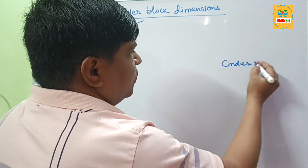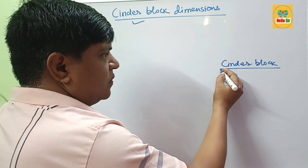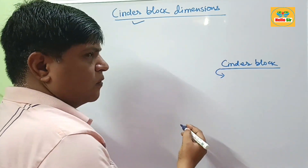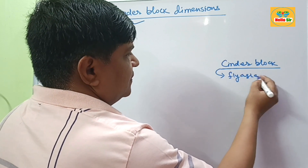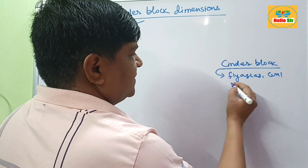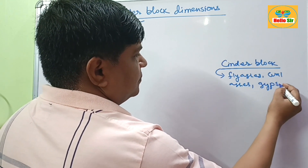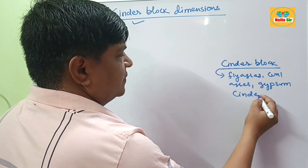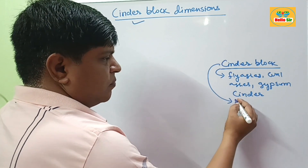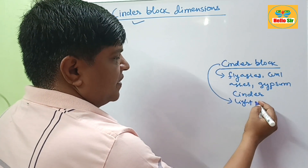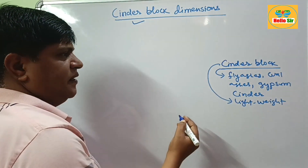First, let's understand what a Cinder Block is. You are familiar with a Concrete Block. If the concrete block is made from fly ash, pull ash, and sometimes gypsum or cinder materials, that concrete block is known as a Cinder Block. It means a Cinder Block is a lightweight material — it is made from lightweight materials.